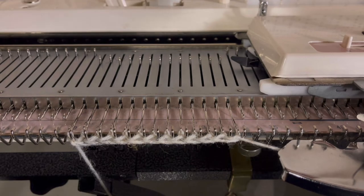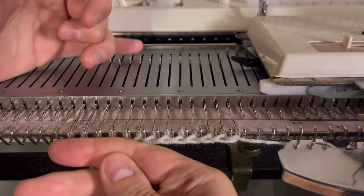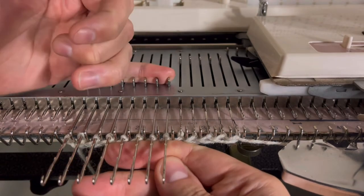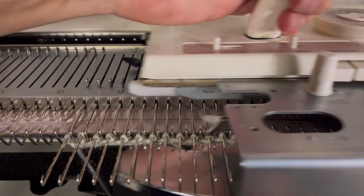After completing the last needle, thread the carriage and pull all the needles into hold position, bracing the cast-on against the needle bed to prevent the needles from pulling the cast-on edge forward.